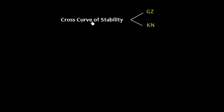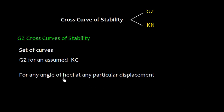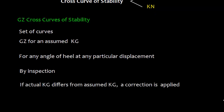Let us talk about cross curves of stability. There are two types: the GZ cross curve of stability and the KN cross curve of stability. To understand the KN cross curve, we first need to understand the GZ cross curve. These cross curves are a set of curves, and GZ is computed for an assumed value of KG — the center of gravity of the ship. For a given angle of heel and displacement, we can obtain the value of GZ. If the actual KG differs from the assumed KG, a correction is applied.